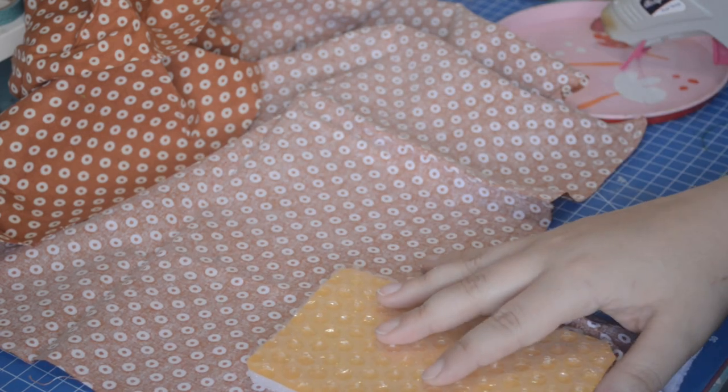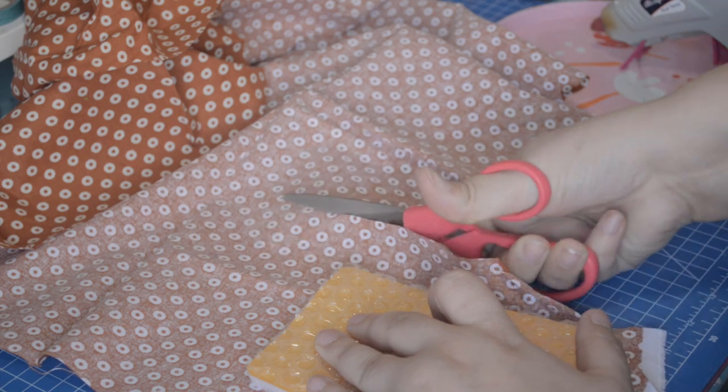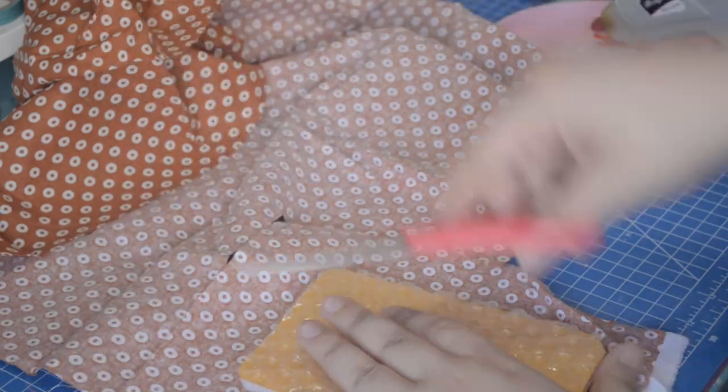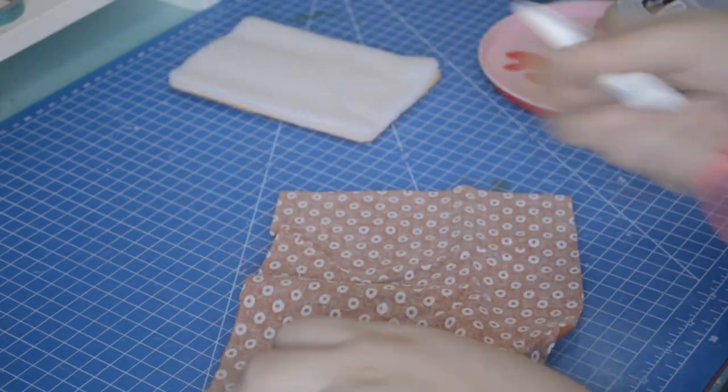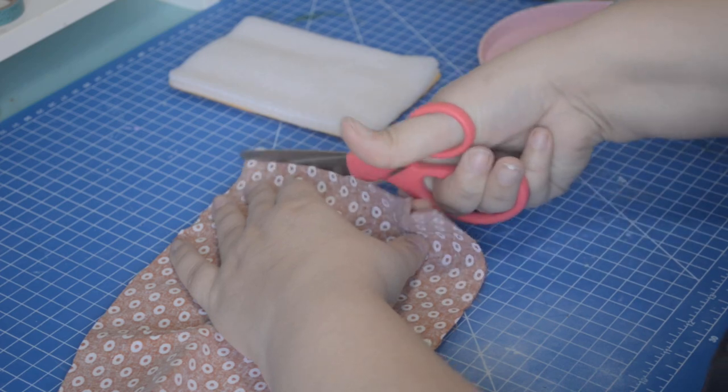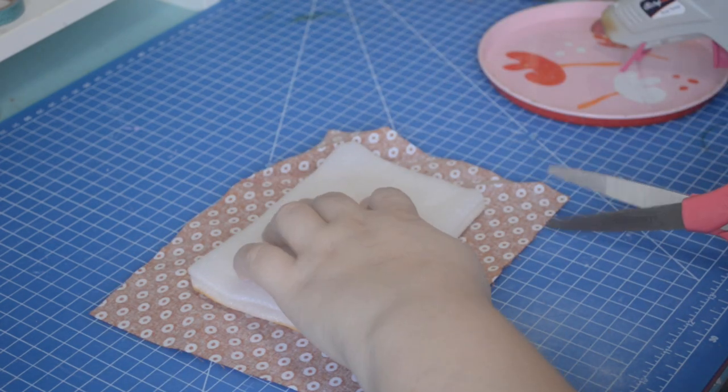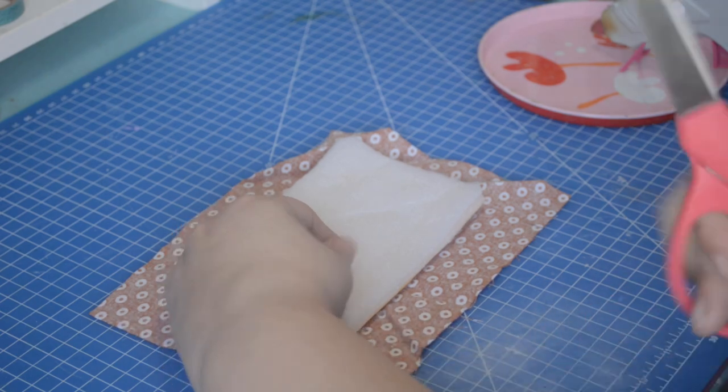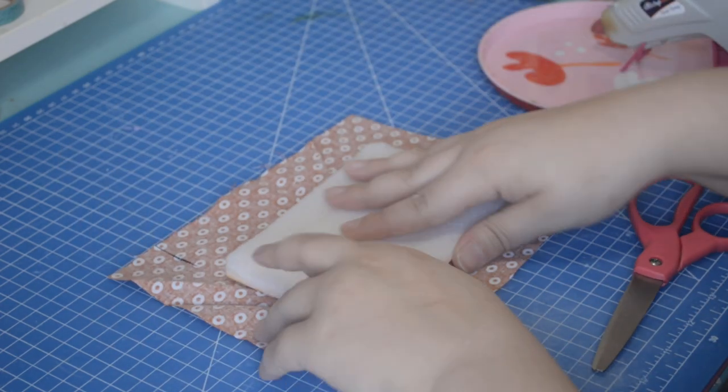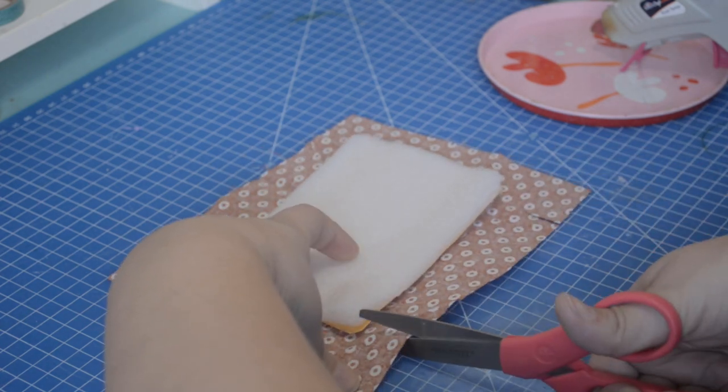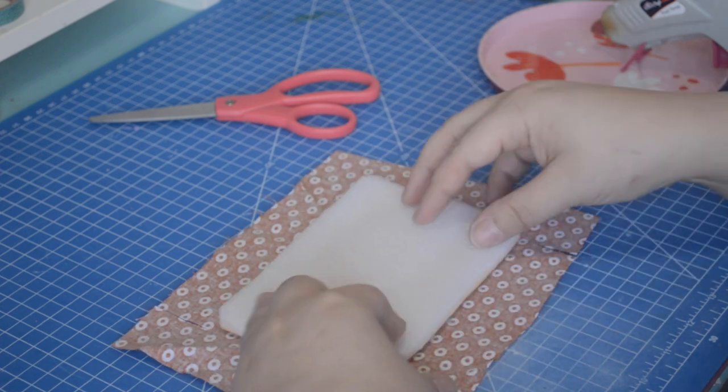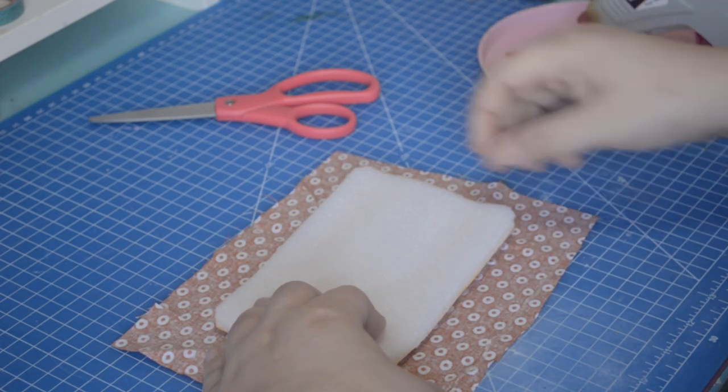This time, instead of using dollar store textiles, I'm using some fabrics from my stash. Fat quarters can be found at some dollar stores, and even at craft stores or big box stores they can usually be found for less than two dollars a piece. Glue around all the edges to make sure it's snug.